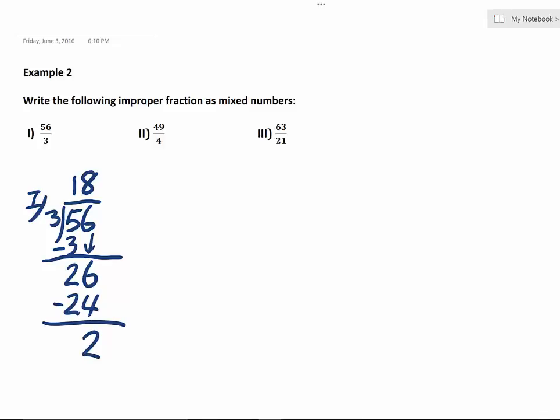So basically, the answer for this, 56 over 3 in terms of mixed number, will be 18. That's the whole number part, and then write a remainder of 2 over 3. So that's your answer for the first question.